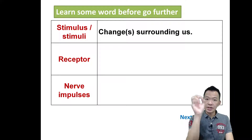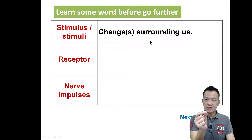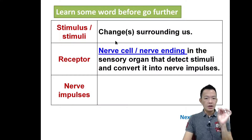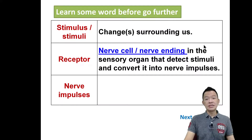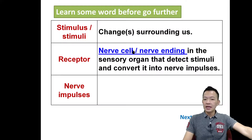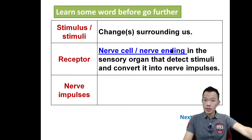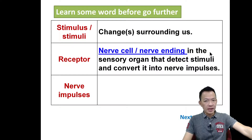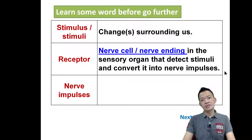So when there is any stimulus surrounding us, we are going to detect the stimulus by using the receptor — your 感应器, your sensory cells. What does receptor mean? Copy this down: receptors are nerve cells, specifically nerve endings in the sensory organs. They detect the stimuli and convert the stimuli into nerve impulses.